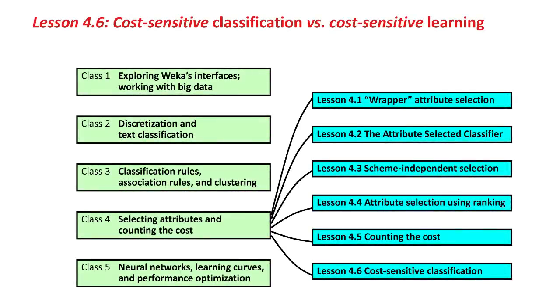Hello again. In the last lesson, we looked at cost-sensitive evaluation, where you use a cost matrix to evaluate the results of a classifier, and cost-sensitive classification, where the classification is performed with the aim of minimizing the cost, rather than minimizing the percentage accuracy. But we didn't talk about how you do cost-sensitive classification, and that's what we're talking about in this lesson, 4.6.